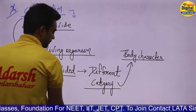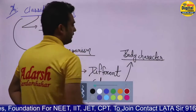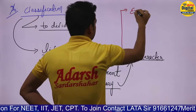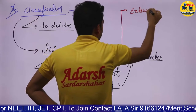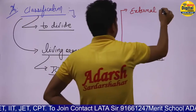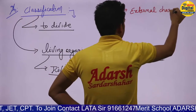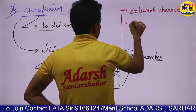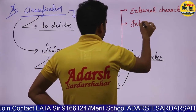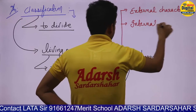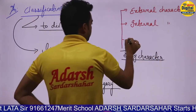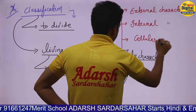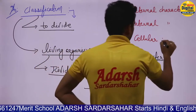And which body characters are used? Number one: external character. Number two: internal character. And third: cellular organization.